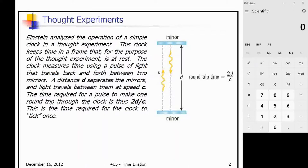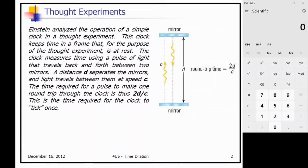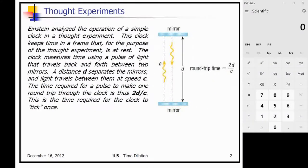Here's the thought experiment that Einstein postulated. He analyzed the operation of a simple clock in a frame that is at rest. This clock measures time using a pulse of light traveling back and forth between two mirrors. If we shoot a beam of light from one mirror to another, the distance between the mirrors we'll call d, and the time for a round trip would be 2d divided by c, the speed of light.